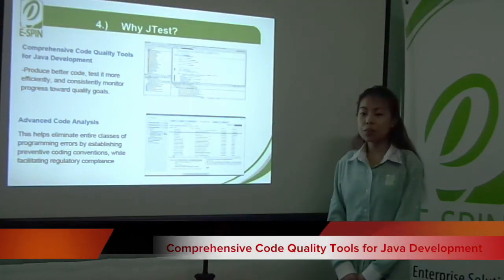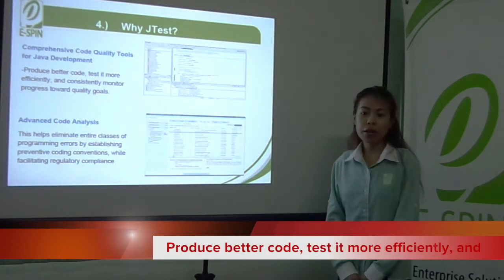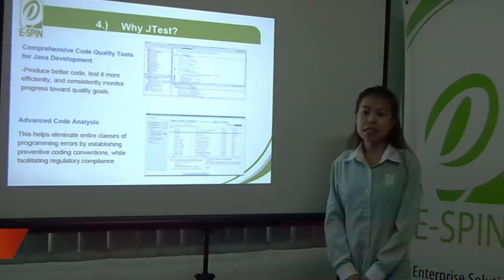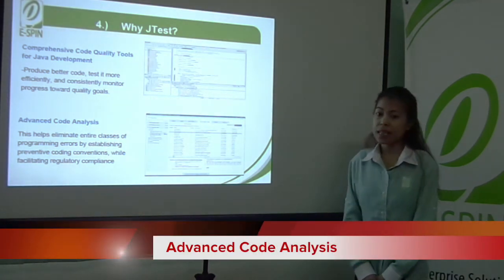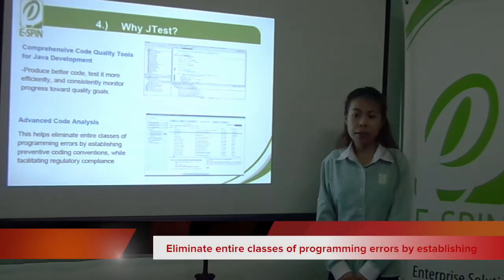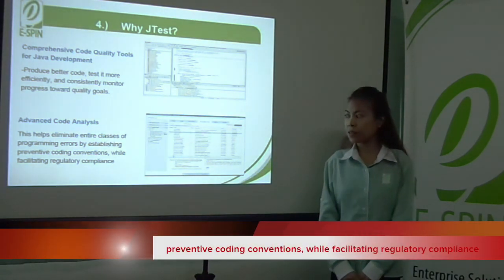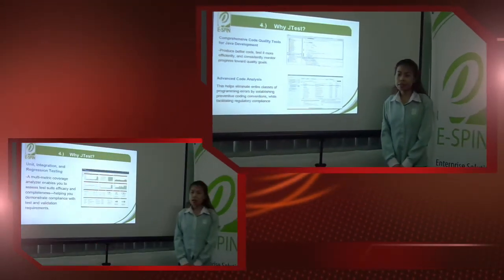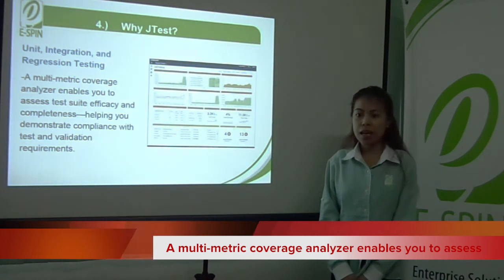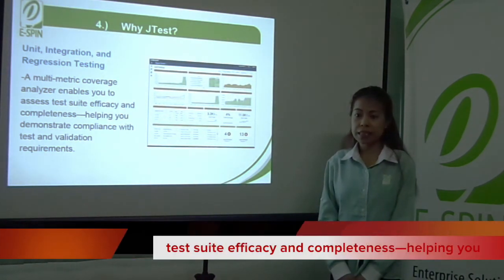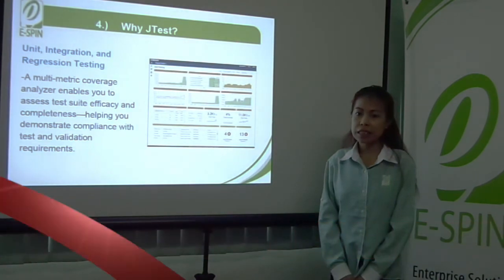JTES provides comprehensive code quality tools for Java development, helping you produce better code, test it more efficiently, and consistently monitor progress toward quality code. Advanced code analysis helps eliminate entire classes of programming errors by establishing preventive coding conventions while facilitating regulatory compliance. Unit, integration, and regression testing with multi-metric coverage analysis enables you to assess test suite efficacy and completeness, helping you demonstrate compliance with test and validation requirements.